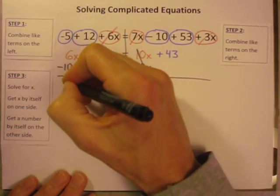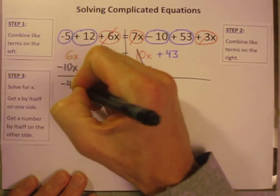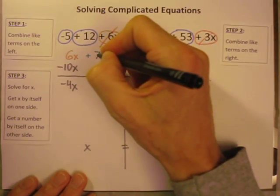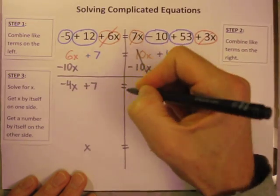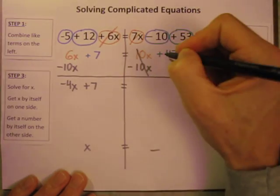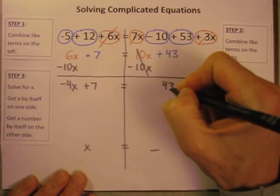6x minus 10x is negative 4x. Let's rewrite everything that remains. Plus 7 is still there. The equal sign is there. The 10x's are gone. The 43 is still there.